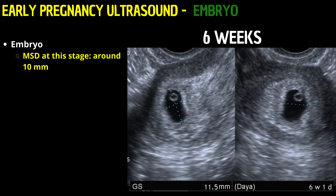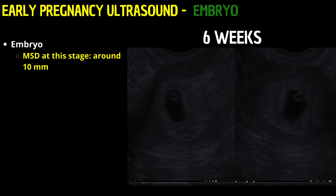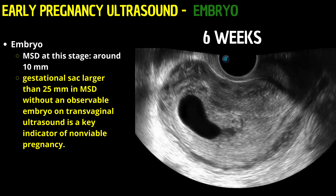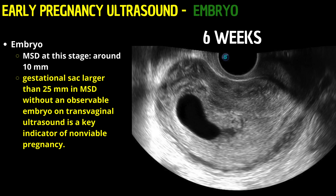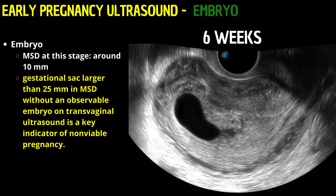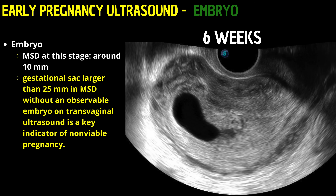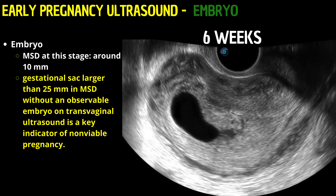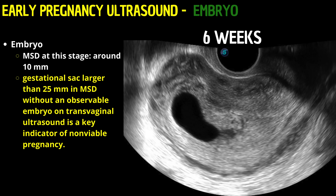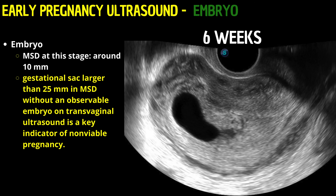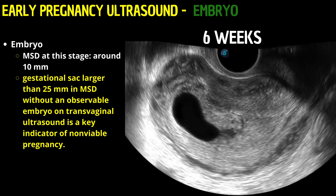The mean sac diameter, MSD, at this stage is around 10 millimeters. Identifying a gestational sac larger than 25 millimeters in MSD without an observable embryo on transvaginal ultrasound is a key indicator of non-viable pregnancy.